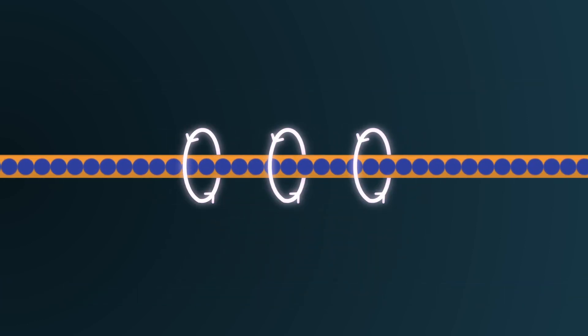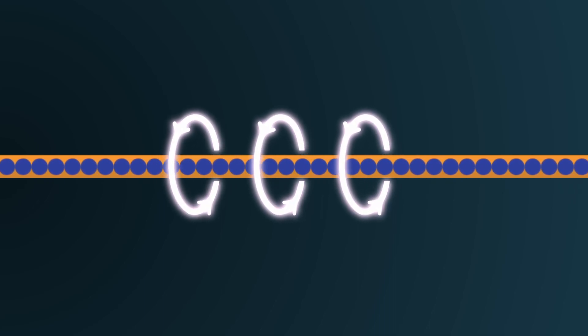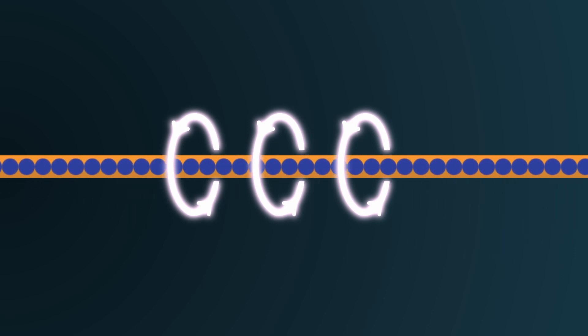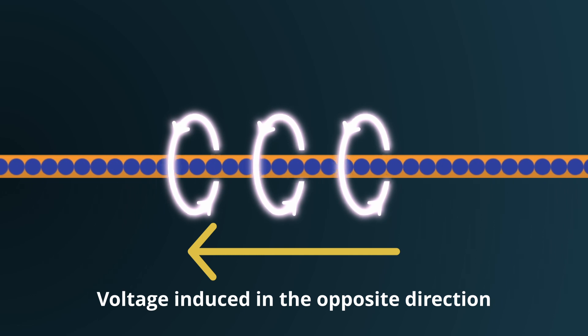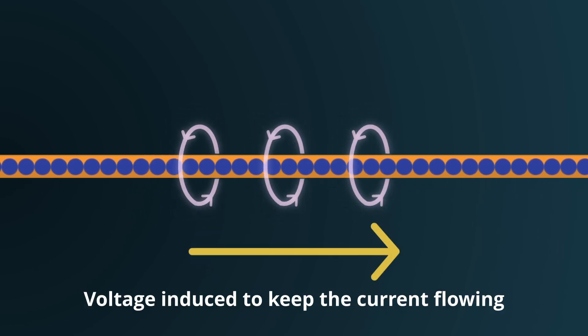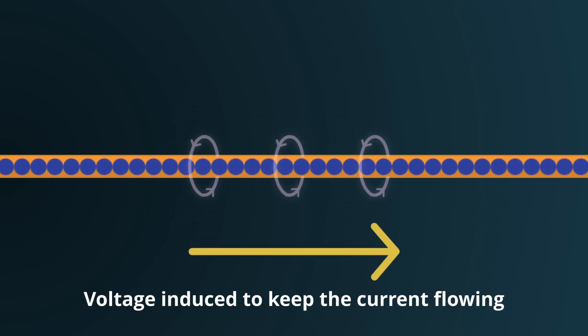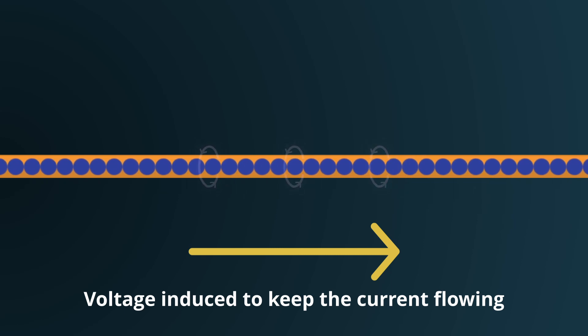In the world of electronics, an inductor is much like our water wheel. When there's a sudden increase in current, the magnetic field generated by the inductor also strengthens, inducing a voltage that opposes this change. Conversely, if the current starts to drop off, the weakening magnetic field induces a voltage that tries to maintain the current level.